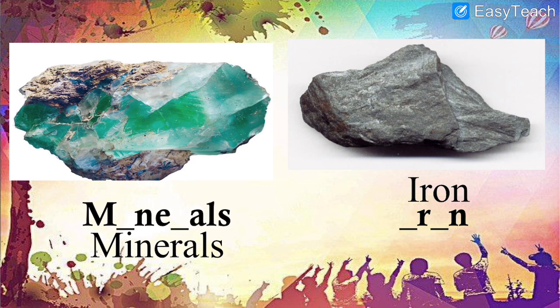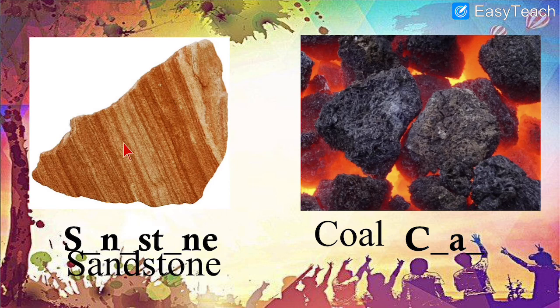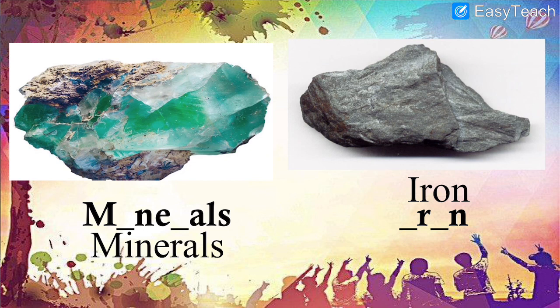So those are the two images you identified. Let us have a recap of what we just completed in the exercise: Granite, Marble, Sandstone, Coal, Chalk, Slate, Minerals, and Iron. In today's video we started with Lesson 9 — Rocks and Minerals — and I gave you brief information about what rocks are, different kinds of rocks, and you identified images. Your homework is to write the names of 10 types of rocks in your rough book, one time. Thank you for watching my video and have a nice day.